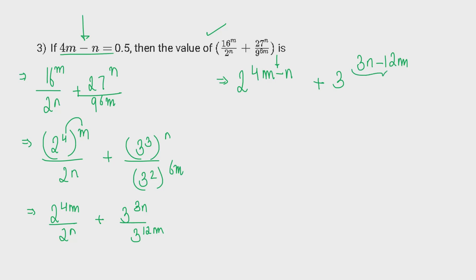Let's take 3 common from the power. Actually, minus 3 so that we get 4m minus 1 in the bracket. And bingo, this value has been given to us. So, all you need to do is substitute the value of 4m minus n which is half.